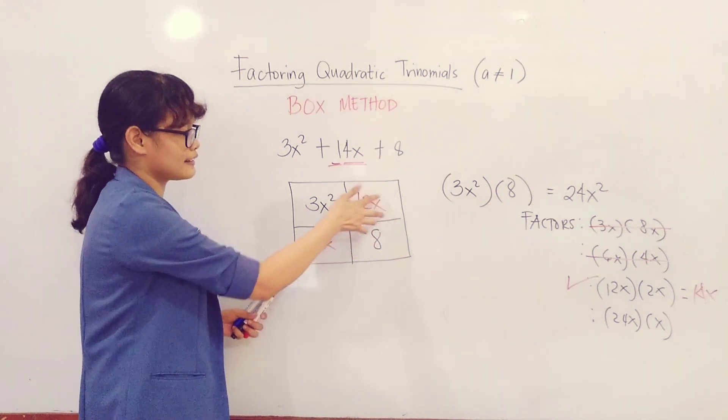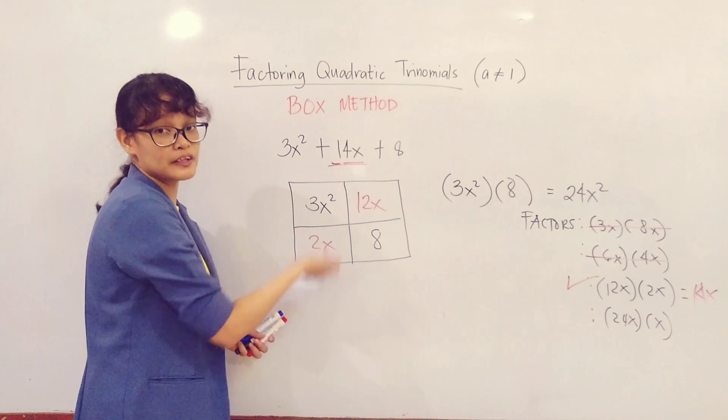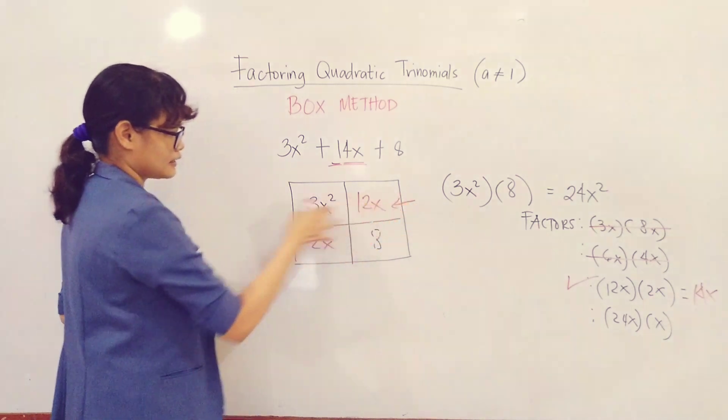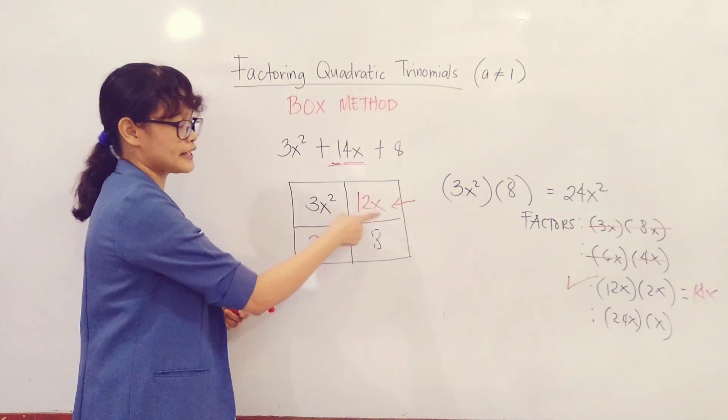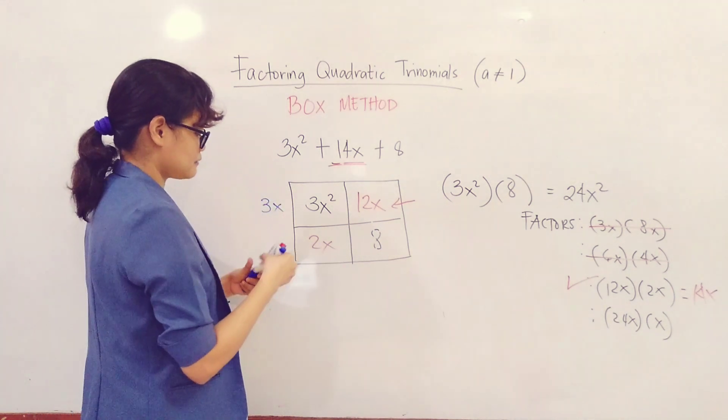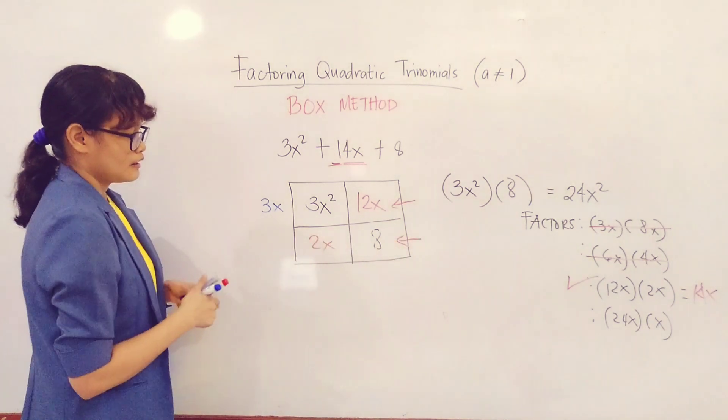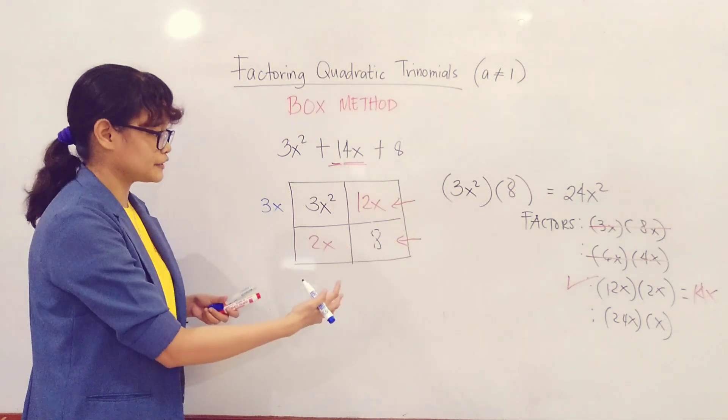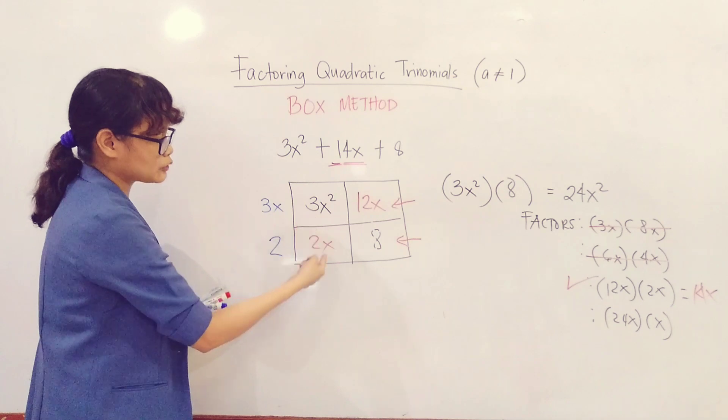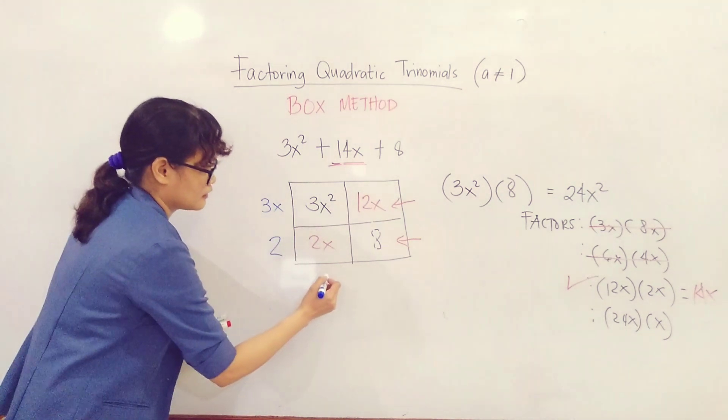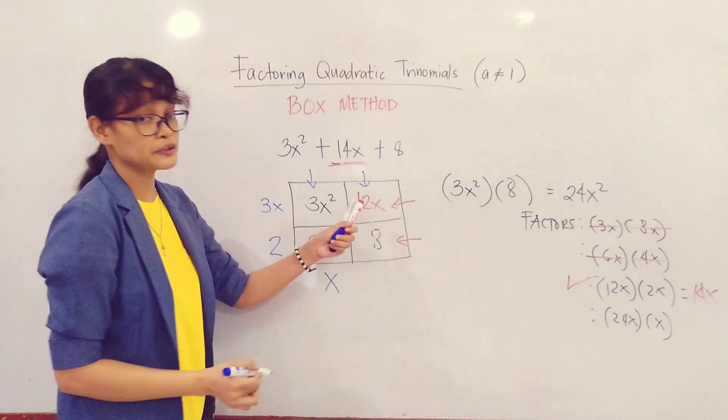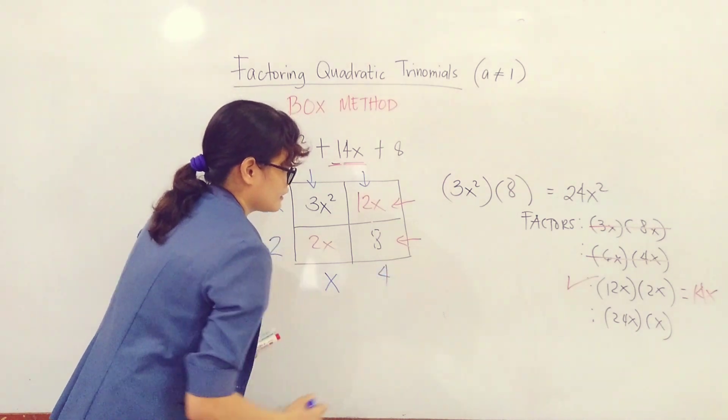This is now the final step. What we need to do here is find the greatest common factor of each row and each column. So let's start with rows. For this one, what is the greatest common factor of 3x² and 12x? It is 3x. Next, down here, what about 2x and 8? What's their greatest common factor? You have 2.